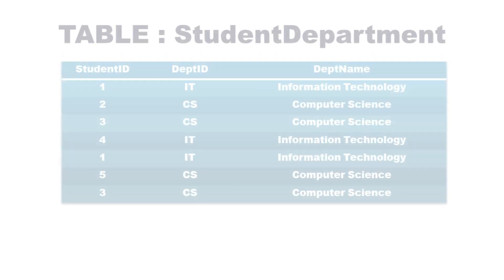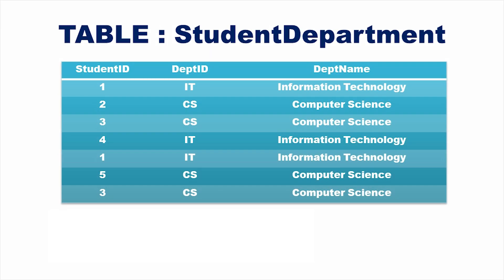Now let us take the relation student department, having three attributes: student ID, department ID, and department name. Student ID and department ID together can uniquely identify department name. That means student ID and department ID determine department name is a functional dependency on the table student department.